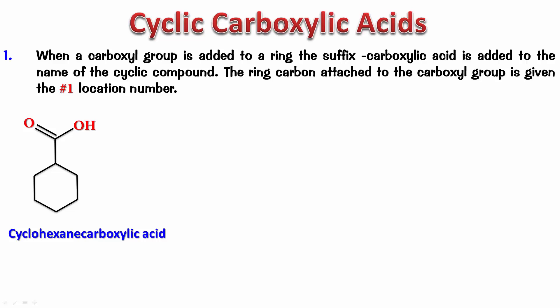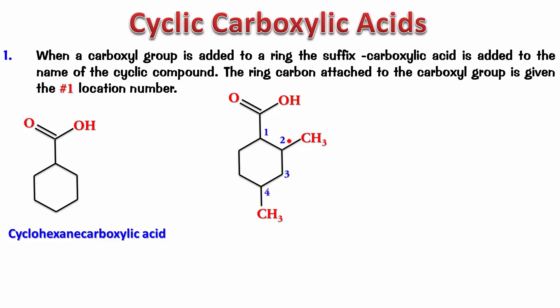Try naming the next example — pause the video and write the name. Here, carbon number 1 is the carbon bearing the COOH, and carbon number 2 follows. The answer is 2,4-dimethylcyclohexanecarboxylic acid. Again, no need to mention the number at which the carboxylic acid group occurs because it is automatically taken as 1.